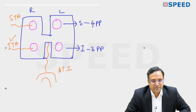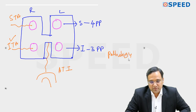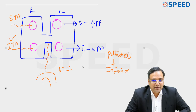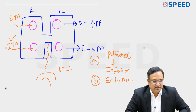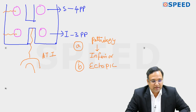Looking into pathology, it is most commonly seen with the inferior gland. Similarly, ectopic location is also most commonly seen with the inferior gland.